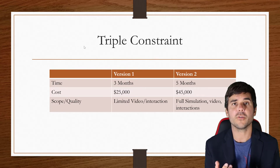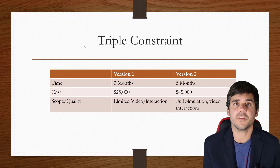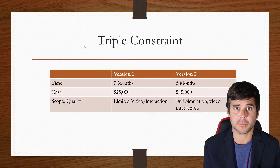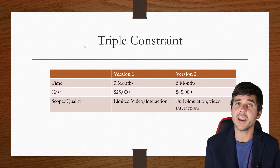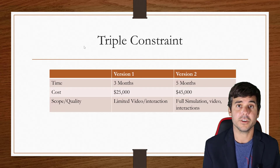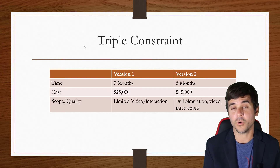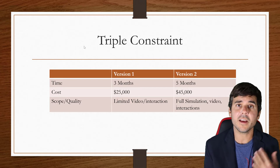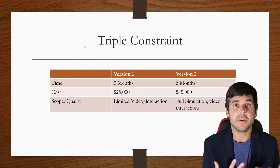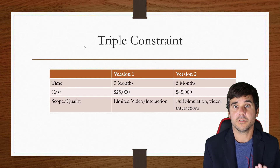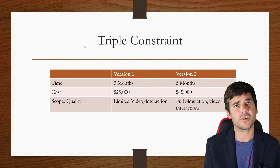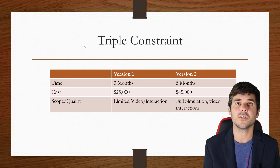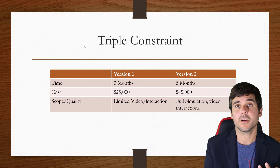You really have to figure out how to balance this on a project before a client commits to something, because at that point you're stuck. If you commit to doing something in six months and realize after the first month it's going to take eight, you have a big problem — you're dealing with scope creep, and that's a big problem. You have to figure this out before a client signs a contract. It's something that takes experience, so a new instructional designer is going to have more issues with this, but it's something you learn.